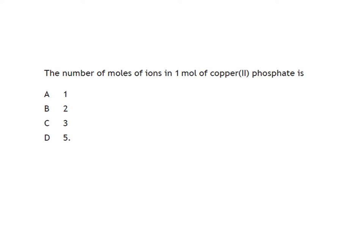To do this one you need to write the formula for copper(II) phosphate. Copper has a 2+ charge and phosphate has a PO4 3- charge. Once you balance the charges out, this is the formula: Cu3(PO4)2. If we have one mole of that chemical, how many moles of ions in total do we have? We've got three moles of copper and two moles of phosphate, so three plus two is five.